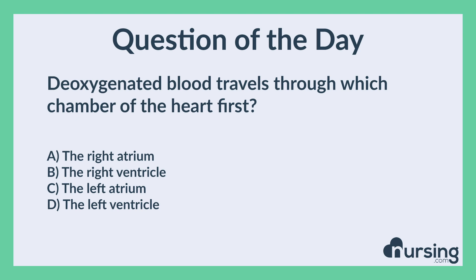Deoxygenated blood travels through which chamber of the heart first? A. The right atrium. B. The right ventricle. C. The left atrium. D. The left ventricle.